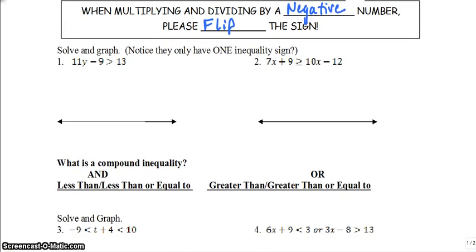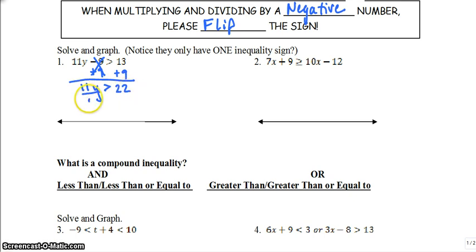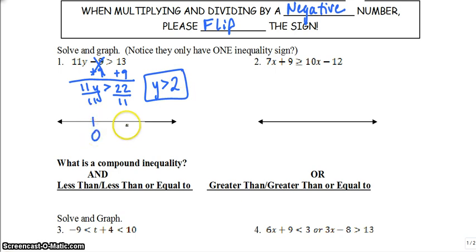Let's look at solving a few inequalities. We solve these just like regular equations, but our answer is a range. To get y by itself, we add 9 to both sides, giving us 11y is greater than 22. Dividing by a positive, so we don't have to flip the symbol — we get y is greater than 2. On the number line, we put an open circle above the 2, because 2 is not included. Plugging in 2 gives 22 minus 9 which equals 13, not greater than 13. So 2 is not included, but all numbers above it are.